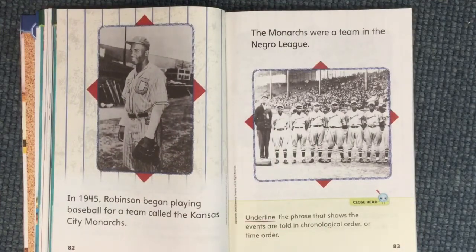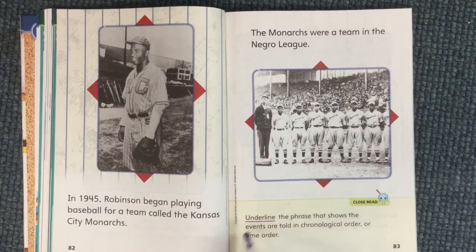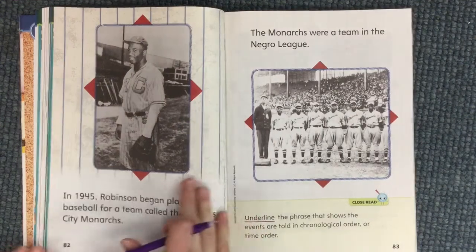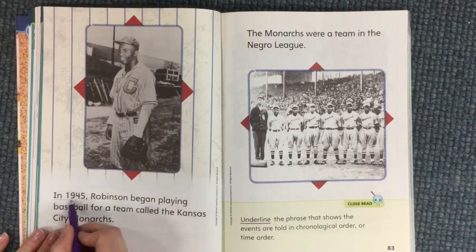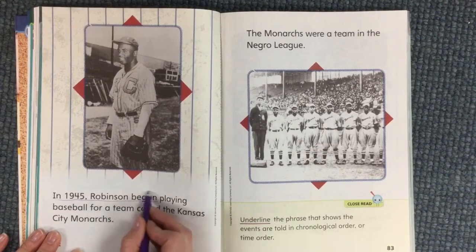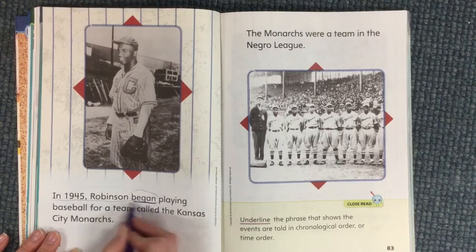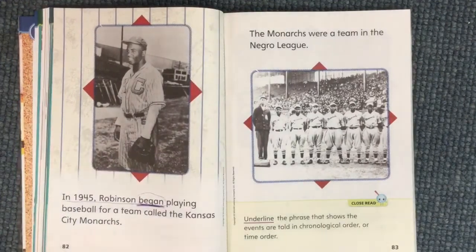In 1945, Robinson began playing baseball for a team called the Kansas City Monarchs. The Monarchs were a team in the Negro League. Underline the phrase that shows the events are told in chronological order, or time order. The word 'began' is our clue that this is the beginning of his playing baseball, so I'm going to underline 'began.'